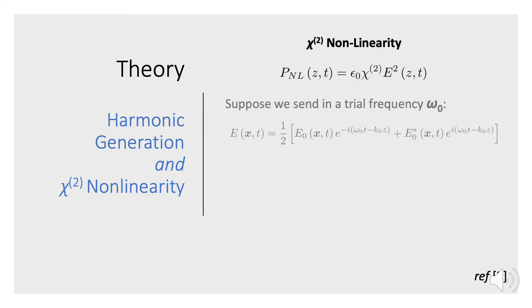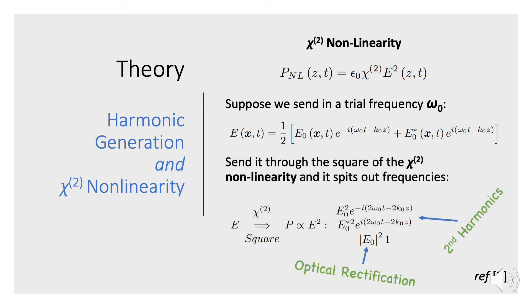If we look at this squared field: suppose we input a trial frequency omega-naught into our chi-2 nonlinearity. That trial frequency is a cosine function — it's just the sum of the forward and backward rotating waves. As we square them, we introduce cross terms, which generate frequencies at twice the input frequency. Those frequencies are known as the second harmonics, and also zero frequencies — that's the optical rectification term.